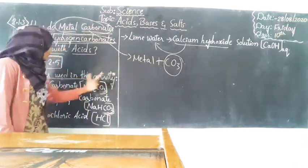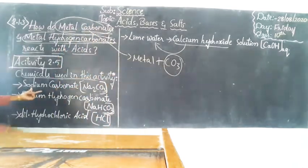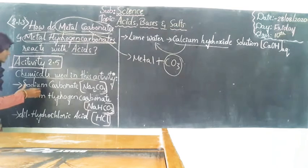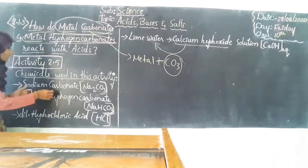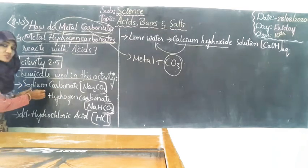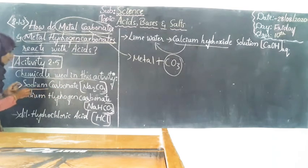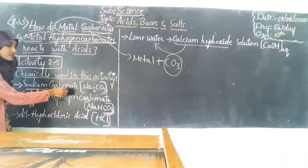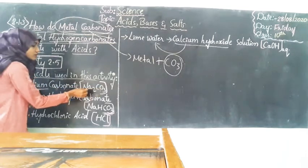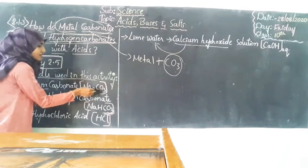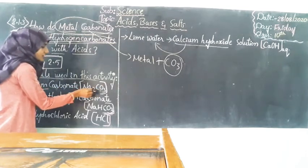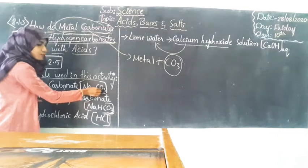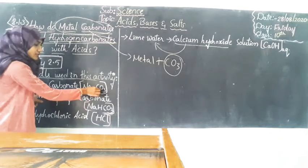For example, take sodium carbonate. The metal here is sodium, and carbonate is CO3. So sodium combined with carbonate gives us sodium carbonate — that is metal with carbonate equals metal carbonate.